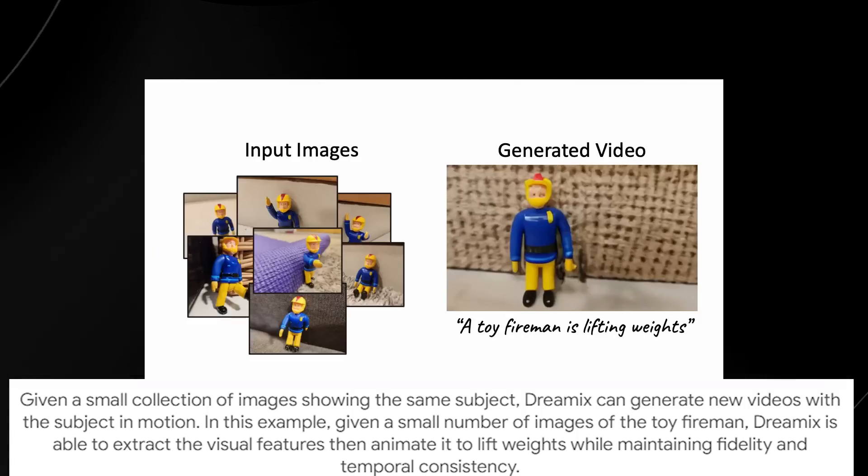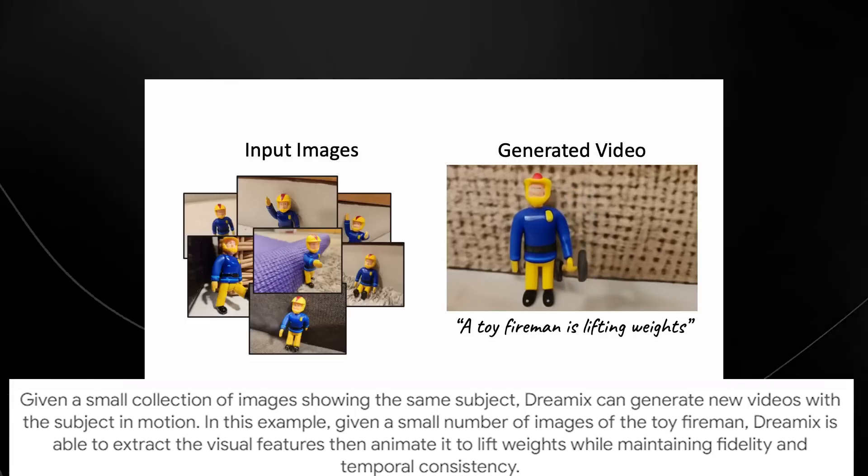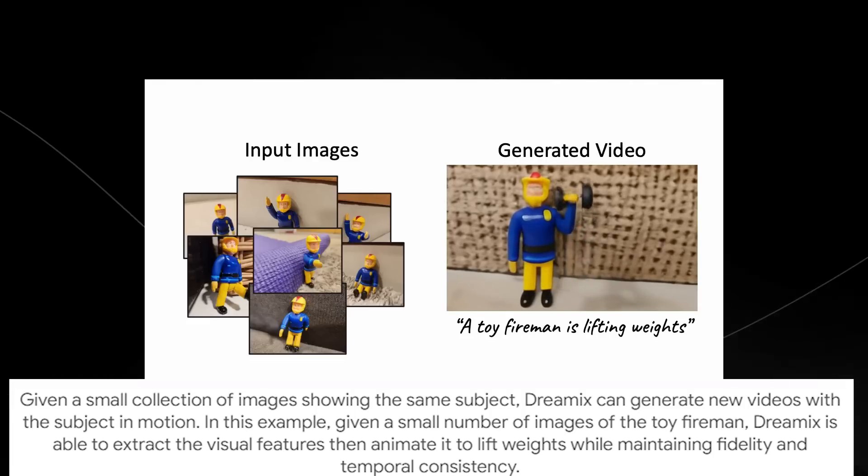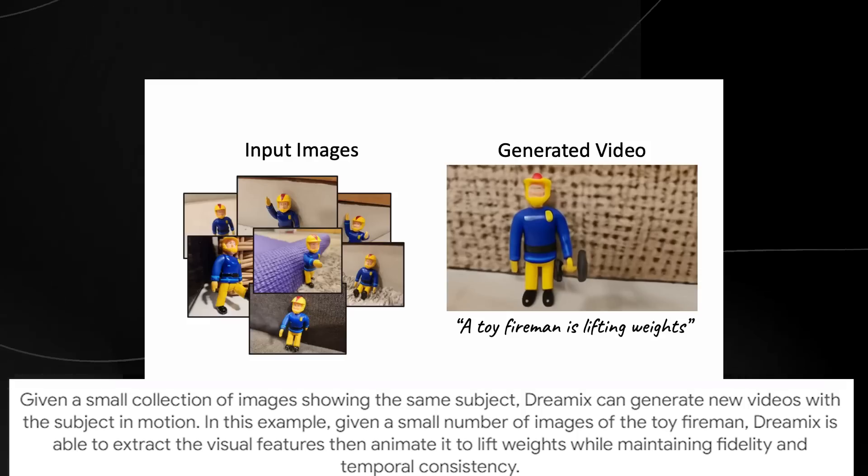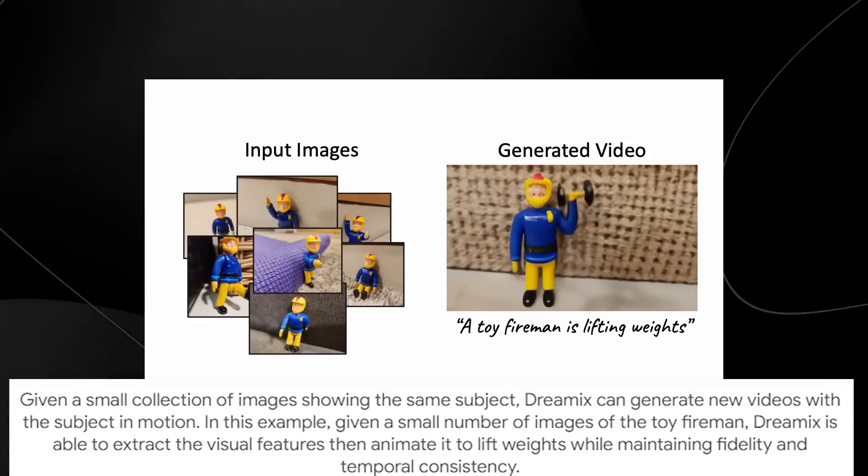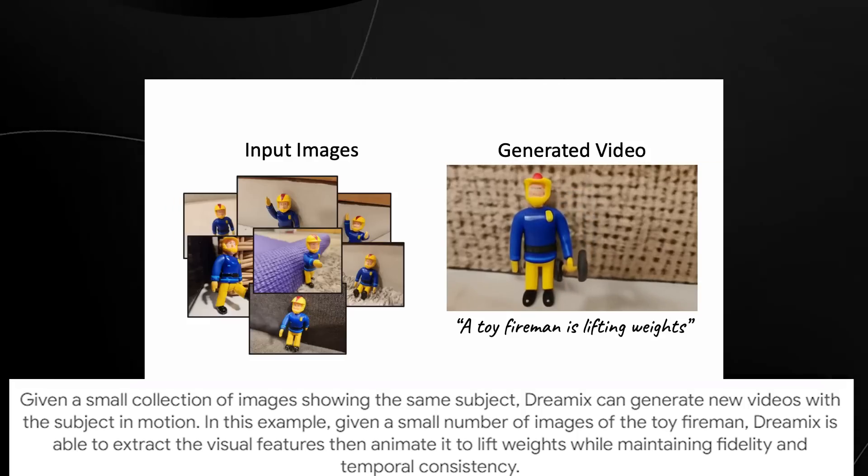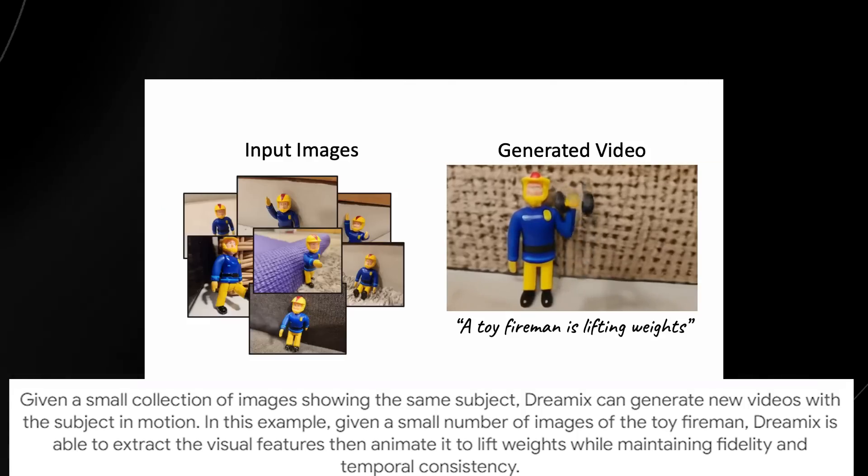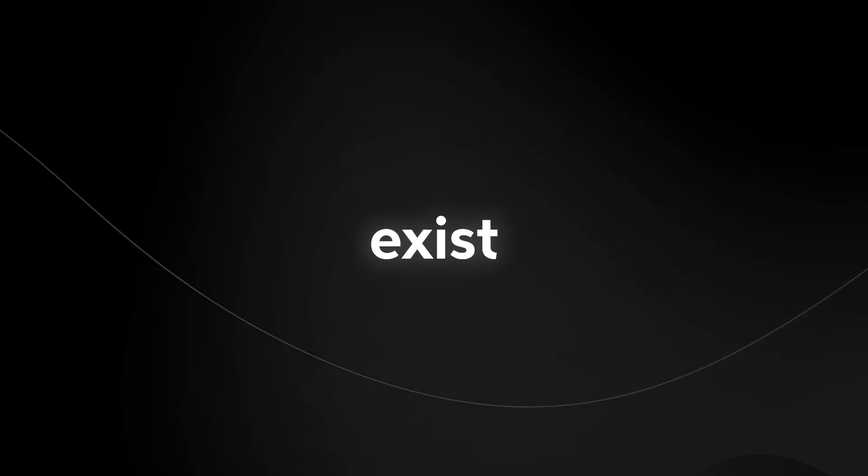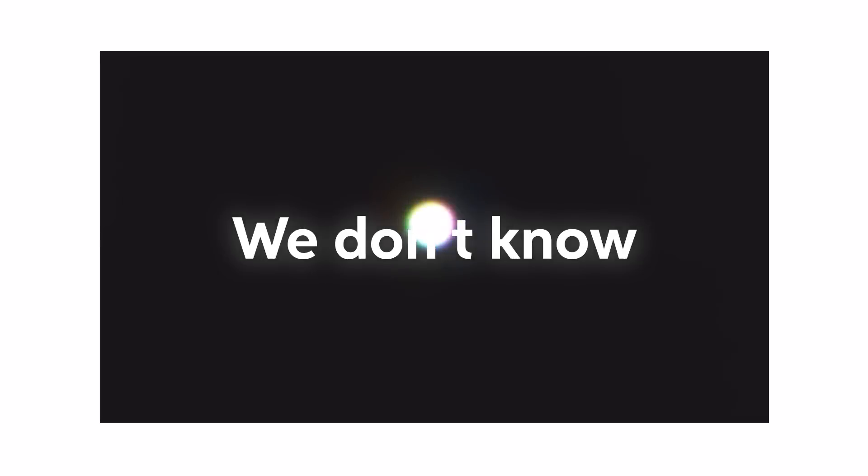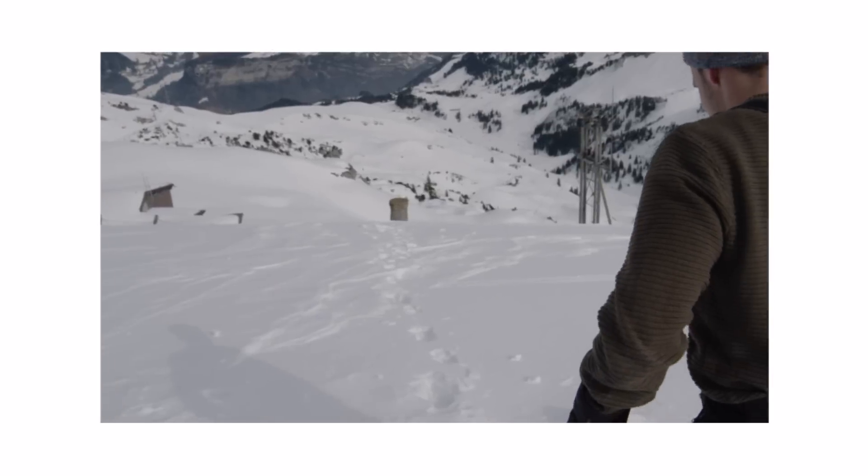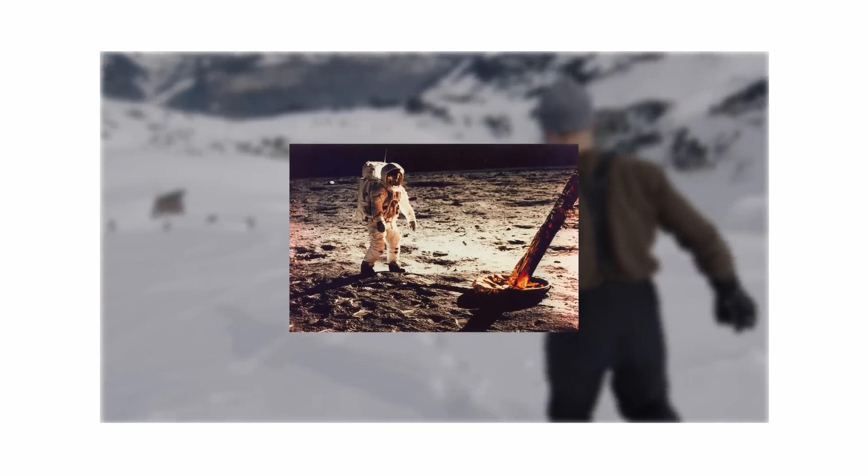So this is really good because we know that this can then be applied to many other things. For example, maybe you want to generate something moving with a Mid Journey character. Maybe you want to pre-visualize something. There are honestly many different applications, but I think that the toy fireman lifting weights is really, really good because the generated video does look pretty realistic compared to some of the other AI text-to-video platforms that exist right now. What I want to do quickly is compare this to something that was recently released, which is Runway's Gen 2.